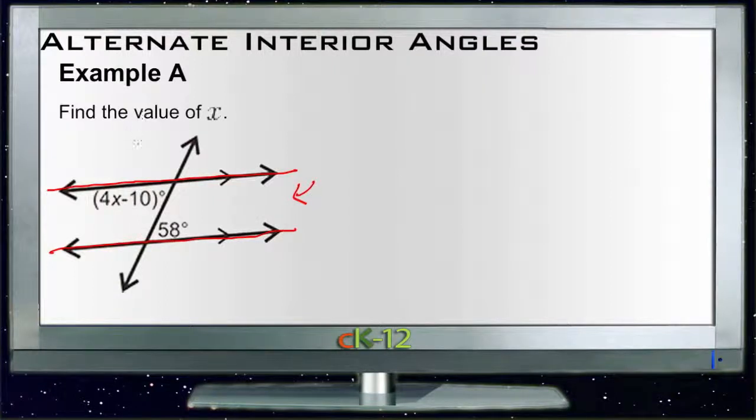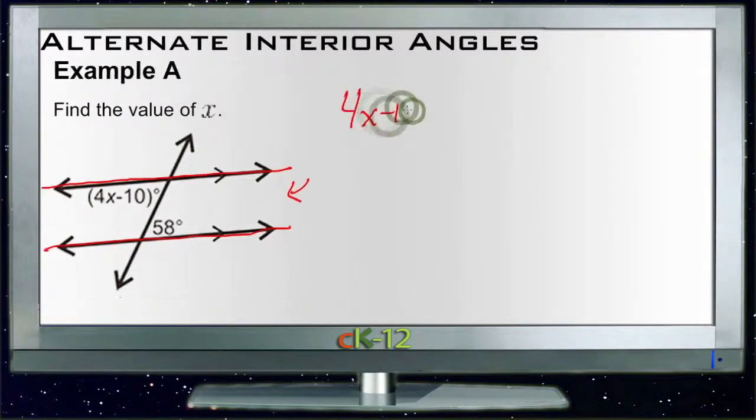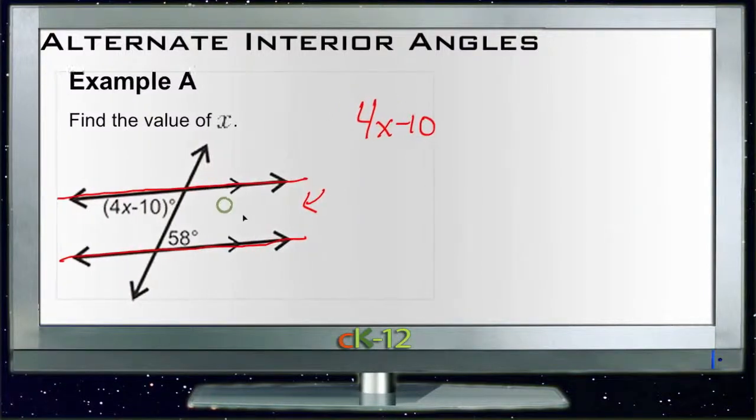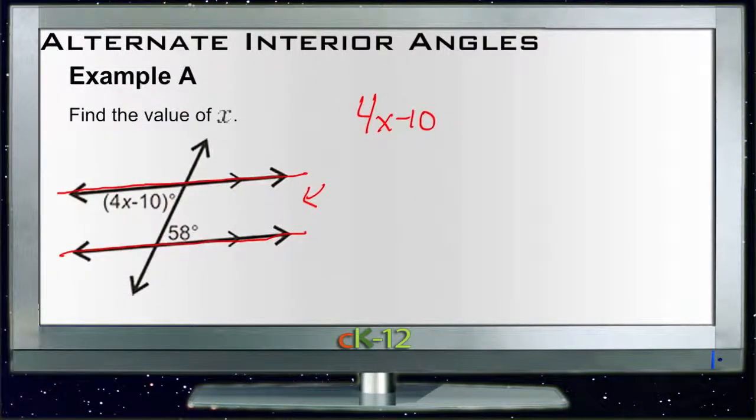Here it says we need to find the value of x. We have 4x minus 10, and we know that 4x minus 10, since it's an alternate interior angle with 58 degrees, must be equal to 58 degrees.